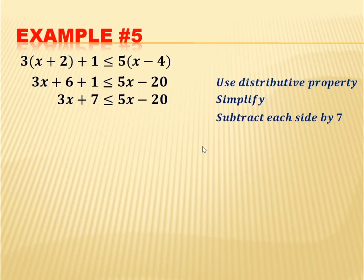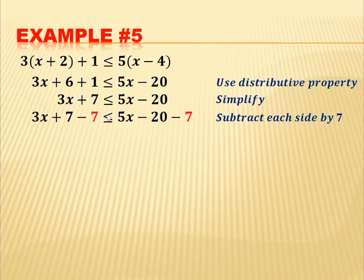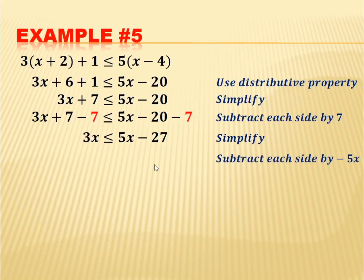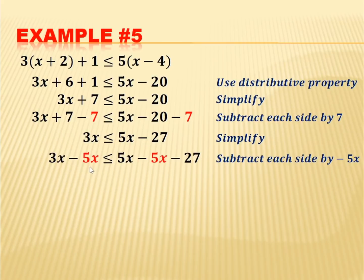We subtract 7 from each side: 3x plus 7 minus 7 is less than or equal to 5x minus 20 minus 7. Simplifying, 3x plus 7 minus 7 is 0, so it becomes 3x is less than or equal to 5x plus negative 20 plus negative 7, which equals 5x minus 27.